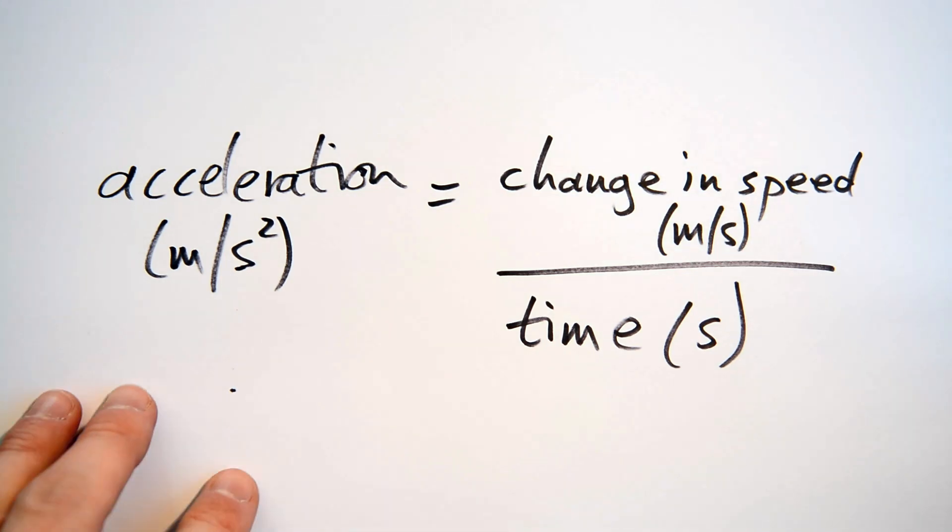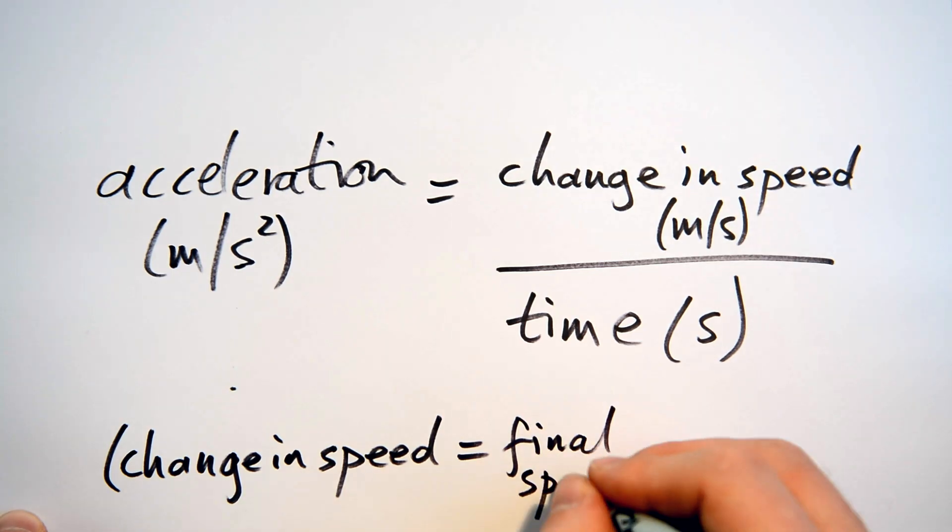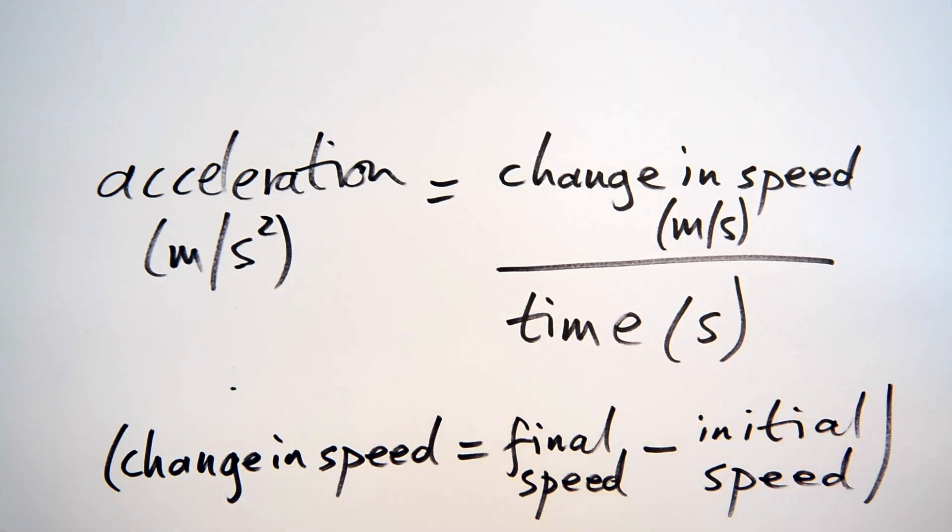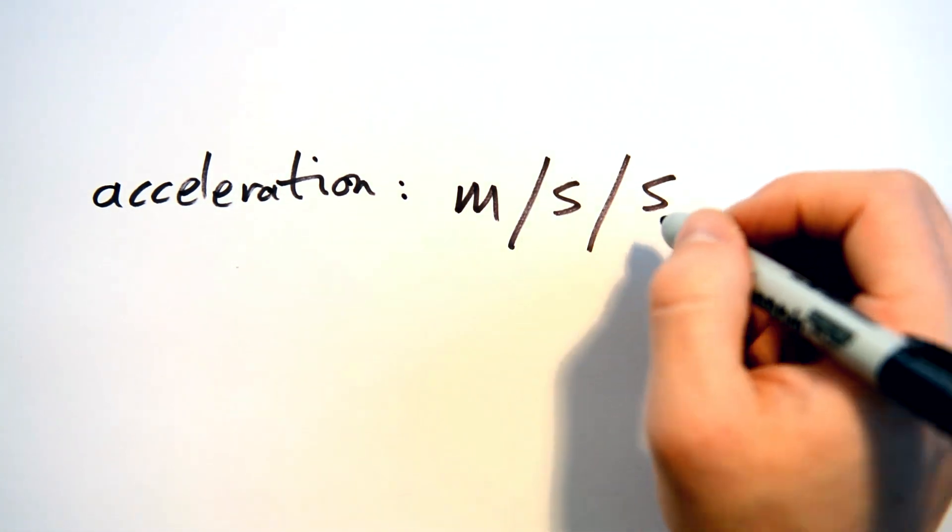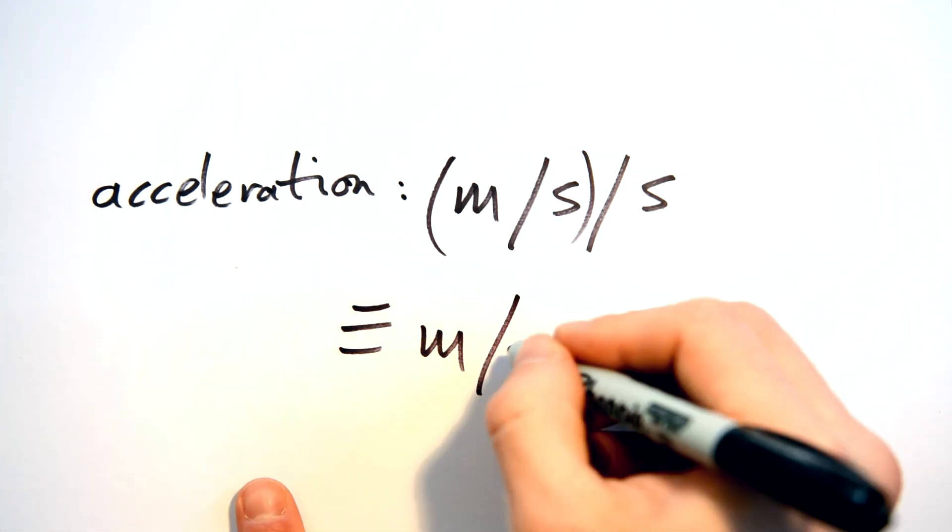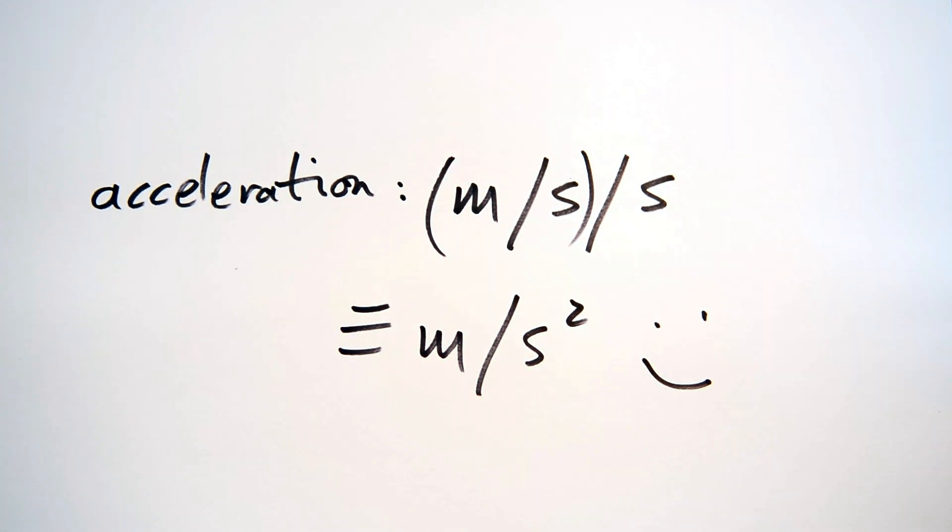You take the final speed, subtract the initial speed, and divide by how long that took. Acceleration is measured in metres per second squared, which makes sense, seeing as though it's a change in speed, metres per second, divided by time again, so that's metres per second per second, and we can write that as metres per second squared.